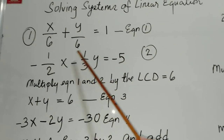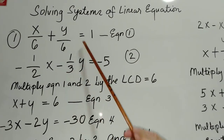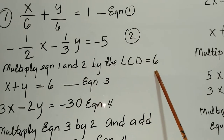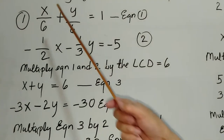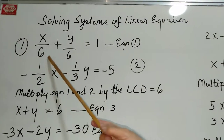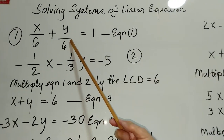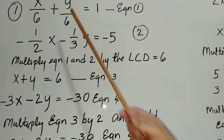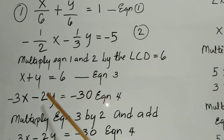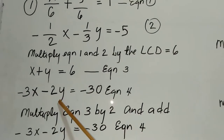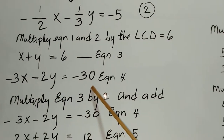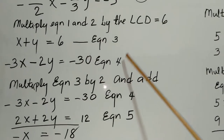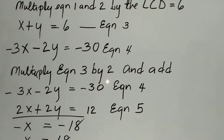We want to get rid of all the fractions, so we're going to multiply both equations by the LCD, which is 6. Doing that, equation 1 becomes x plus y equals 6, and equation 2 becomes negative 3x minus 2y equals negative 30. We call these equation 3 and equation 4, respectively.